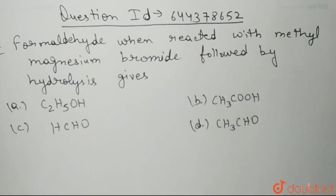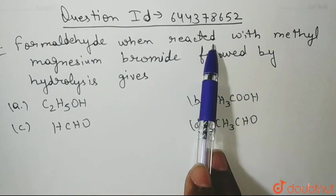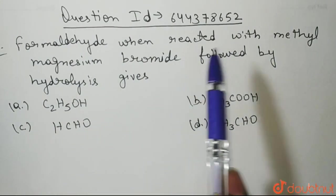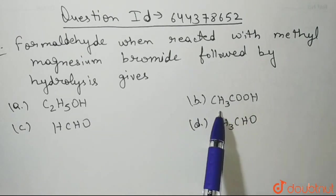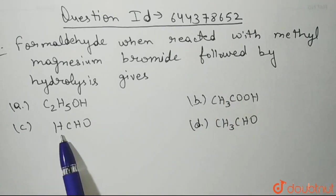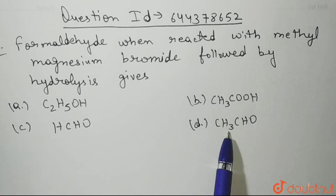So students, the question is: Formaldehyde when reacted with methyl magnesium bromide followed by hydrolysis gives? Your options are: C2H5OH, CH3COOH, HCHO and CH3CHO.